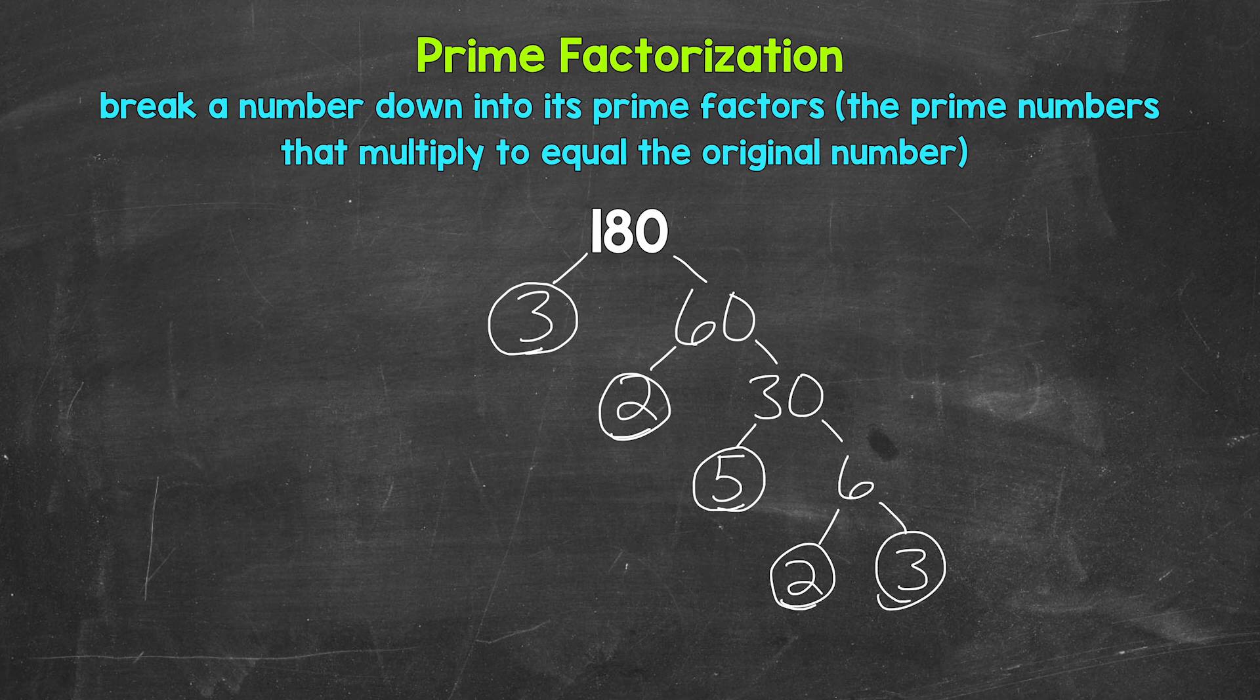And that's the prime factorization of 180. We don't have anything else that we can break down any further. We have all prime numbers. So let's write this out as 180 equals, and then we can write out our prime factors in order from least to greatest, and we are multiplying them.